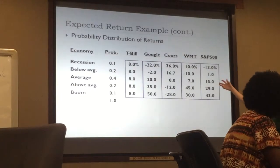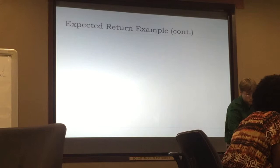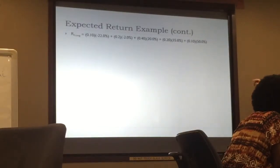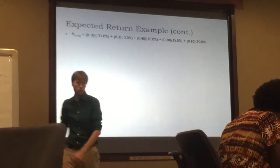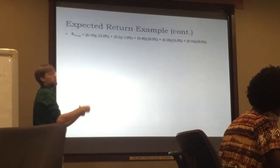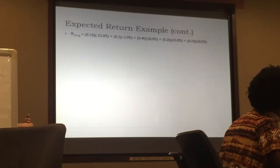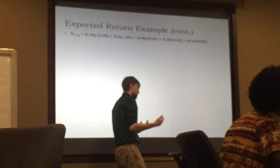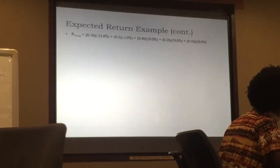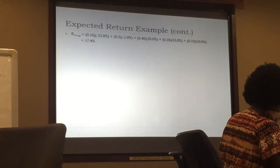We're standing here today before this unfolds. If I'm looking at any of these stocks and investing in them, what is my expected return based on its probability distribution? Starting with Google: the expected return equals 10% times negative 22%, plus 20% times negative 2%, plus 40% times 20%, plus 20% times 35%, plus 10% times 50%. We bake that all together and add it up, and Google's expected return is 17.4%.